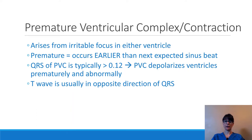The QRS complex of a premature ventricular contraction is usually greater than 0.12 seconds, which is outside the ordinary less-than-0.12-seconds range. This means the PVC depolarizes the ventricles prematurely and abnormally. It's an early beat that occurs earlier than we would expect the next beat, and it usually looks wide and bizarre because the interval is greater than 0.12 seconds. The T-wave is usually in the opposite direction of the QRS.